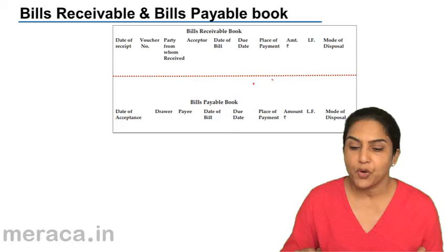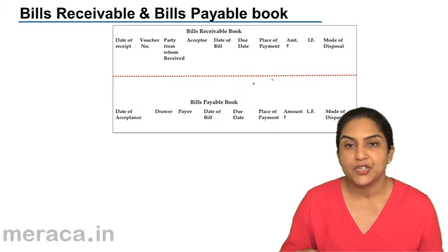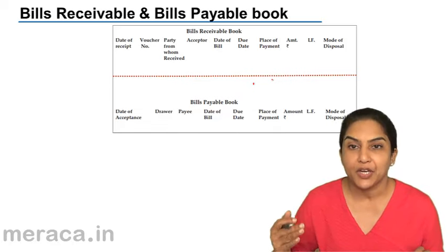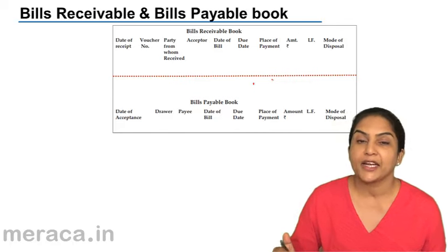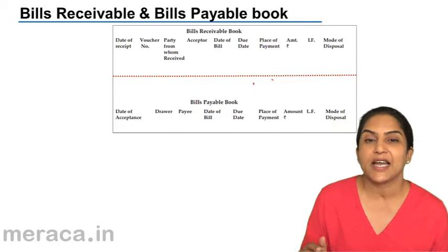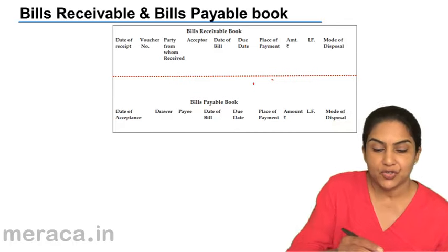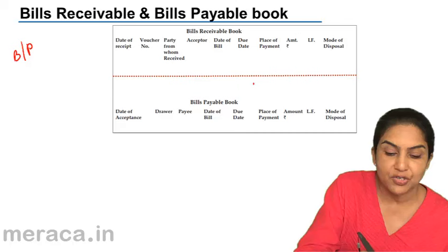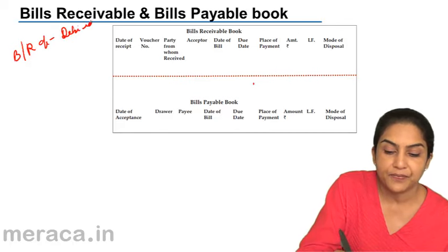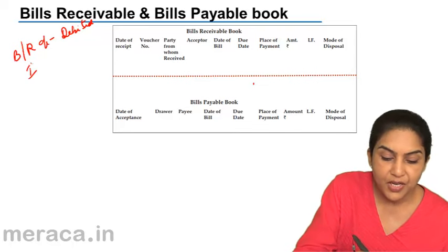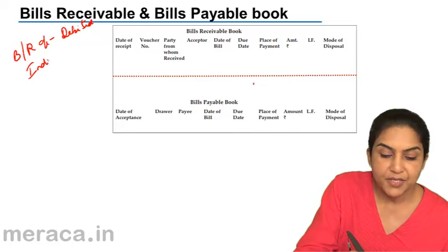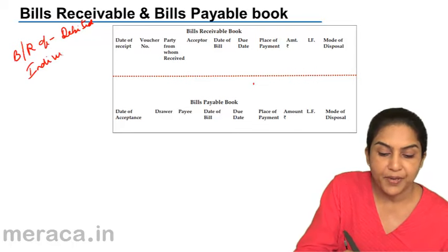How do we post a bills receivable book? You can take a periodic total of the bills receivable and take it to the debit side of the bills receivable account. Bills receivable account will be debited and individual customer's account would be credited.